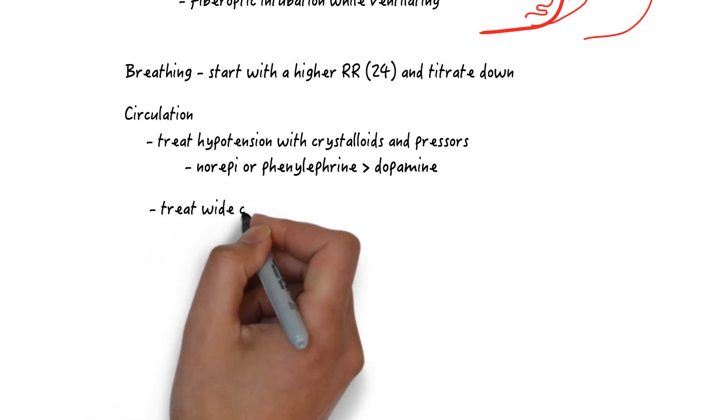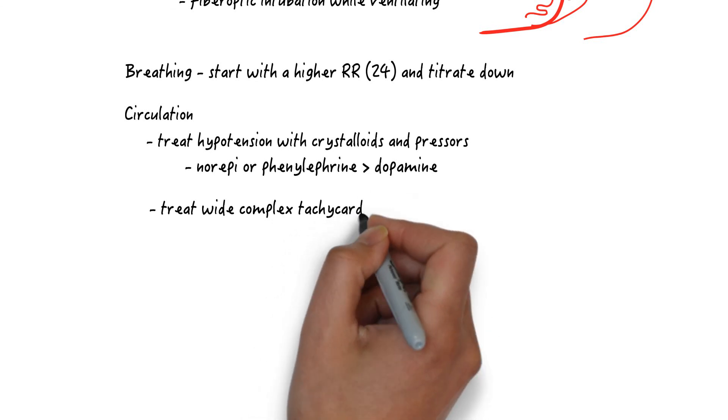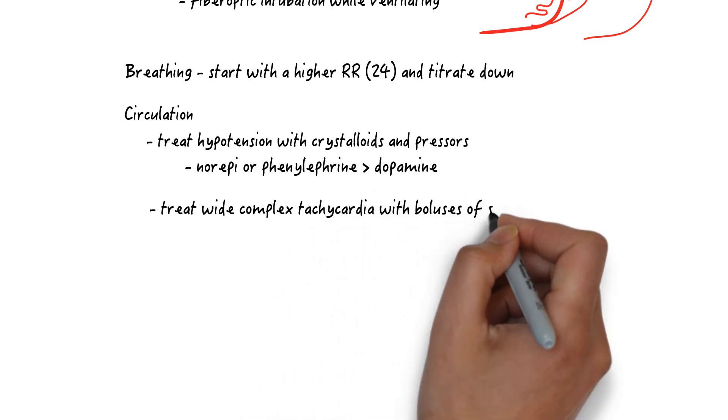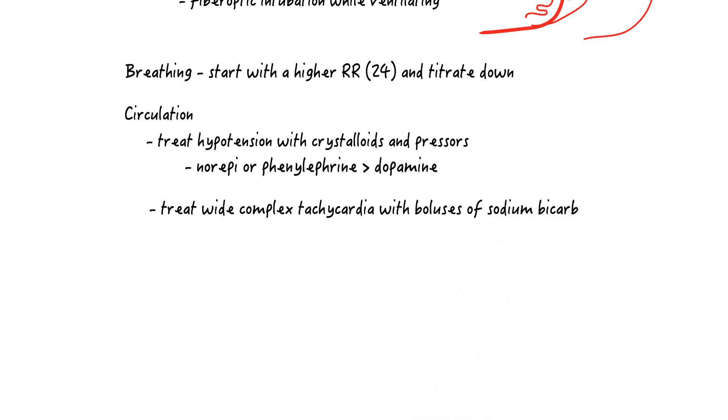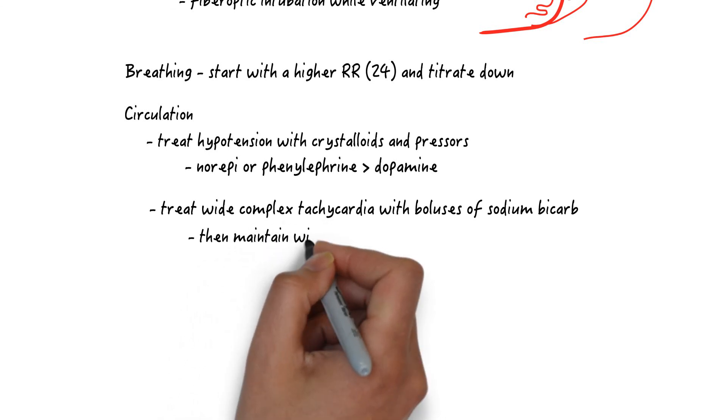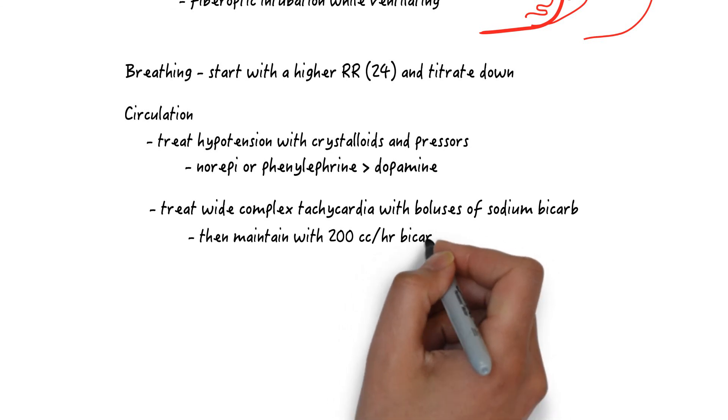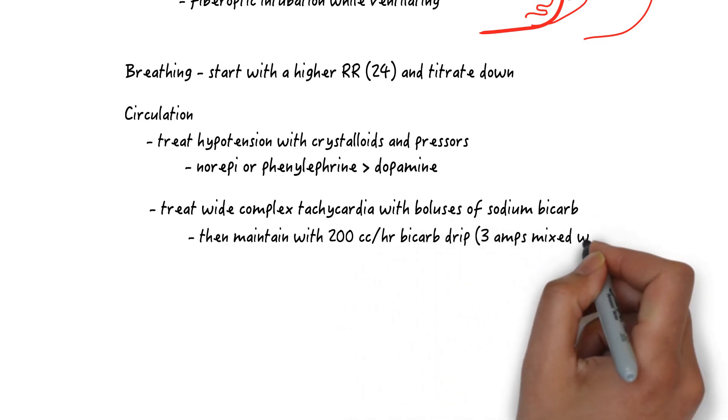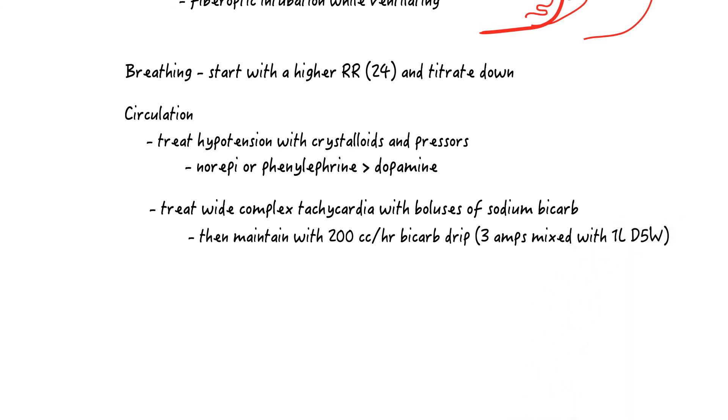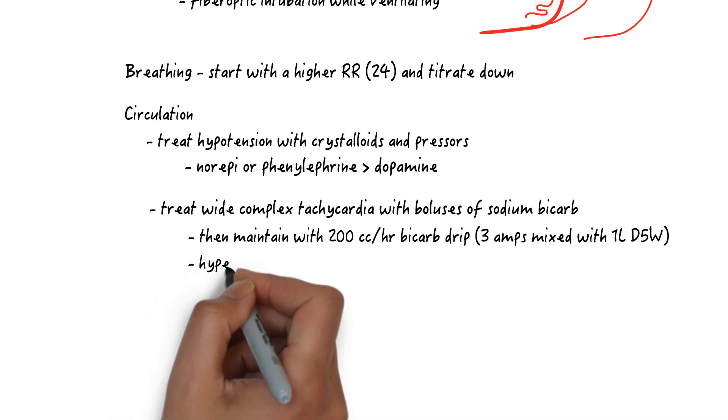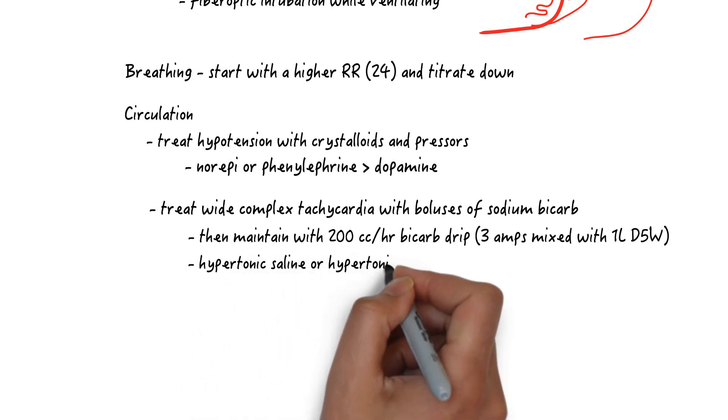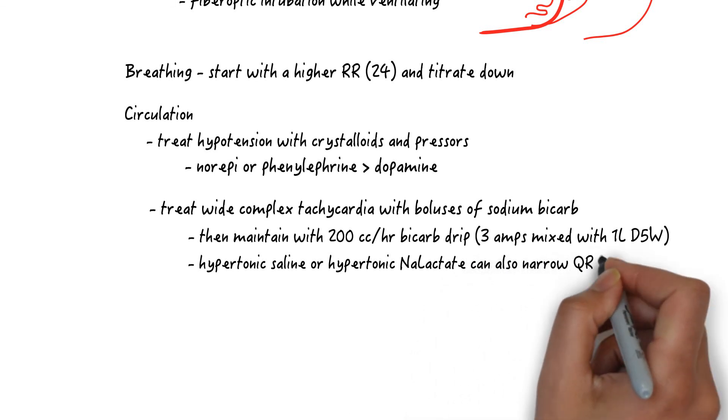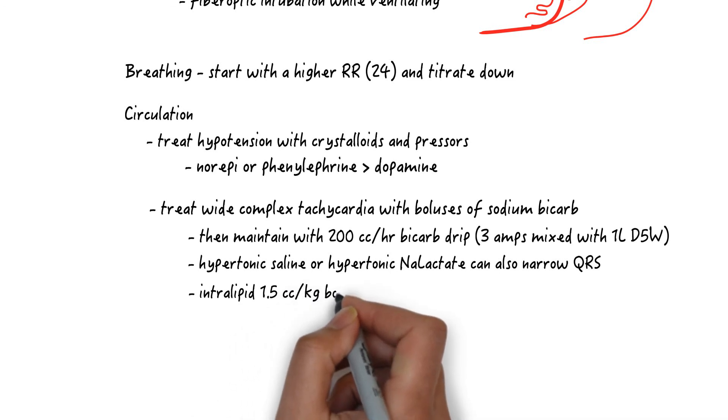For wide complex tachycardias which is driven by sodium channel blockade, give 3 amps of sodium bicarbonate and increase the ventilation as already mentioned. Think ahead and prepare a bicarbonate drip. Mix 3 amps of sodium bicarbonate with 1 liter of D5 water and infuse that at a rate of 200 cc per hour. Keep giving sodium bicarbonate boluses until the QRS narrows ideally less than 100 milliseconds or if you hit a plateau with a pH going above 7.55. If the pH is above 7.55, consider first lowering the respiratory rate to eliminate respiratory alkalosis. If this fails, use hypertonic saline or hypertonic sodium lactate for the sodium load. If all of this fails, use intralipid to decrease the free drug further: 1.5 mls per kilo or 100 cc in a 70 kilo patient over one minute.